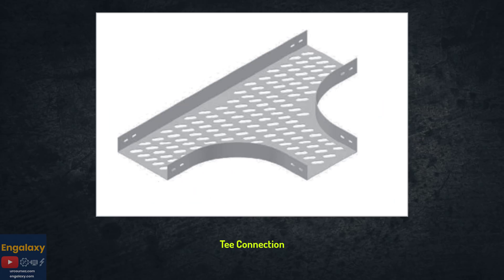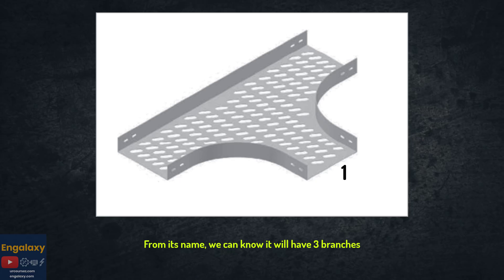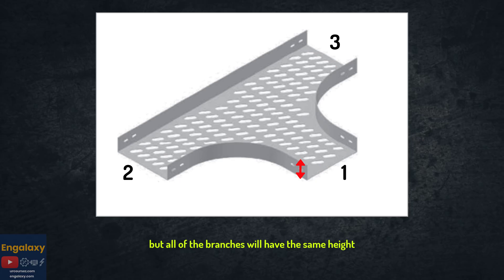T connection. It can be an equal or unequal T. From its name, we can know it will have three branches, so you need to specify the width of each branch. But all of the branches will have the same height. Also, you need to mention its thickness.